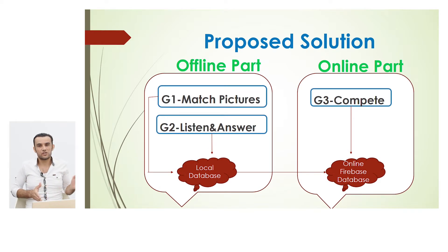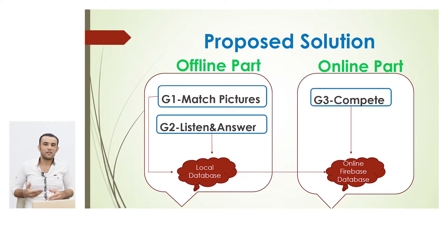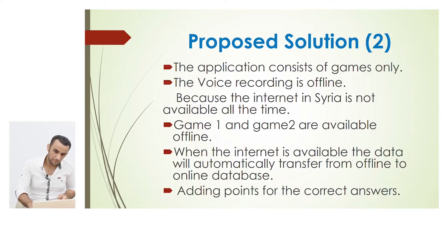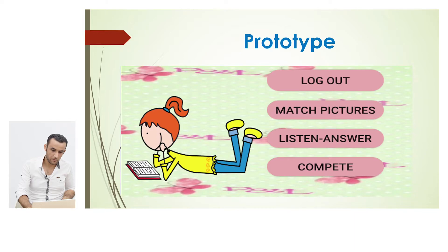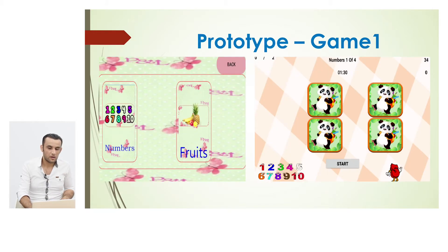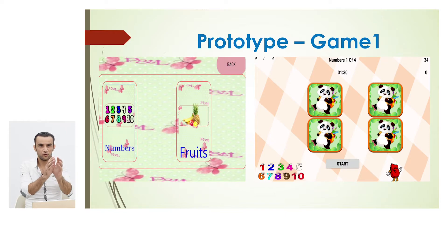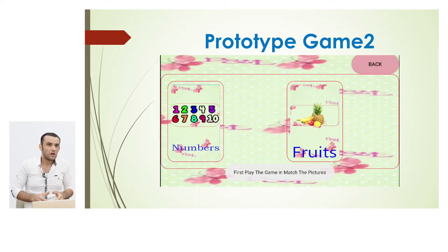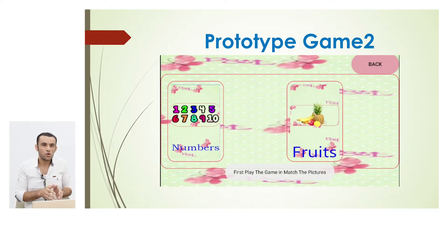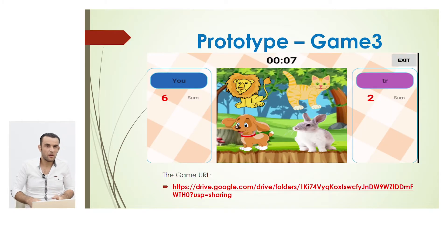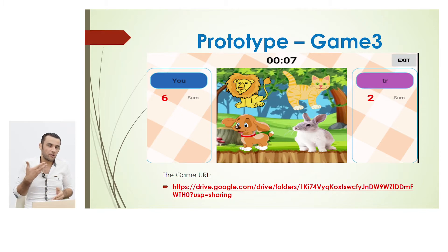The final game is Compete with Others — it needs internet because you search for another child connected online and they compete against each other. This is the home page of my application. The first game has levels like numbers, fruits, etc. In the second game, to play the numbers level you must have completed it in the first game. The third game, Compete with Others, has time limits, and the child who gets more points wins.